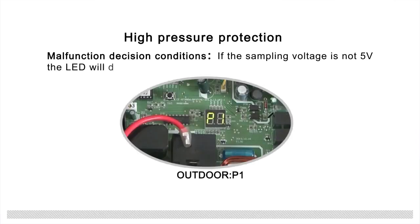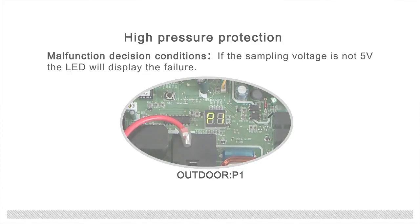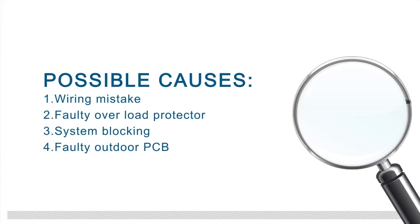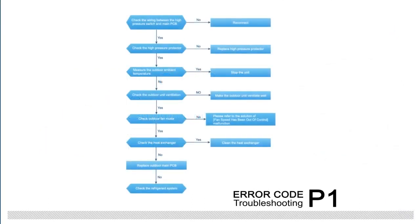High pressure protection malfunction conditions: if the sampling voltage is not 5 volts, the LED will display the failure. The failure may be caused by wiring mistake, faulty overload protector, system leakage or blocking, or a faulty outdoor PCB. Troubleshooting is shown in the figure.